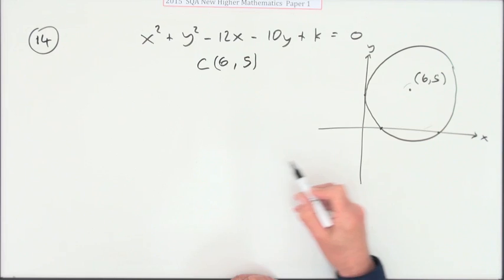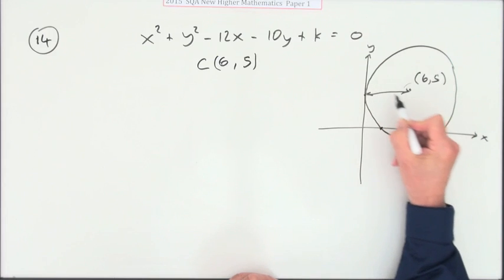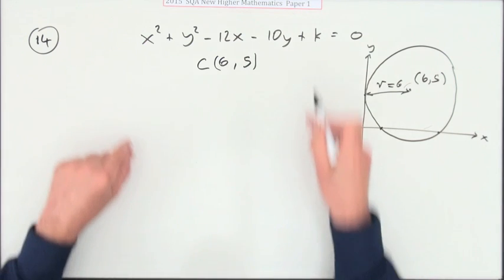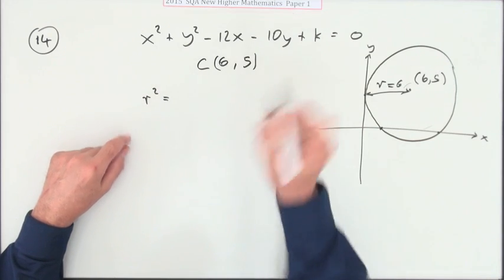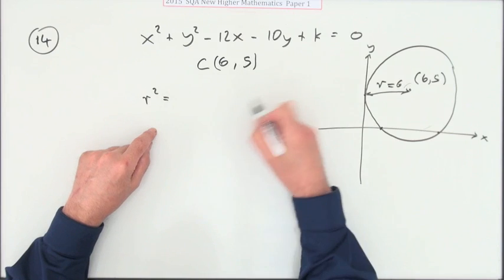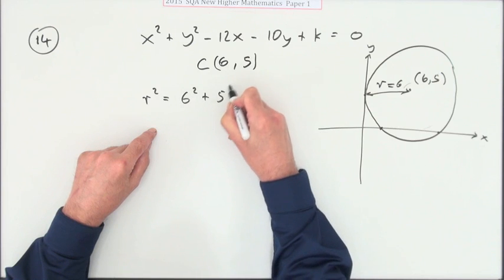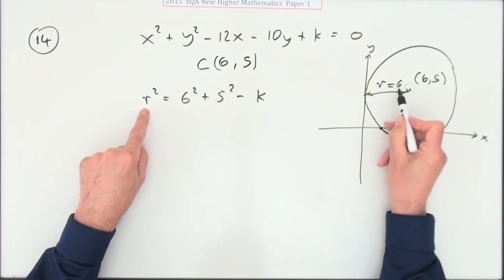So there's the condition. So what do I know about this circle then? Well, I know that its radius will be this distance here. Its radius will be exactly 6. So how do you get the radius from this equation here? Well, you get the radius squared from the coordinates of the center squared minus the number at the end.